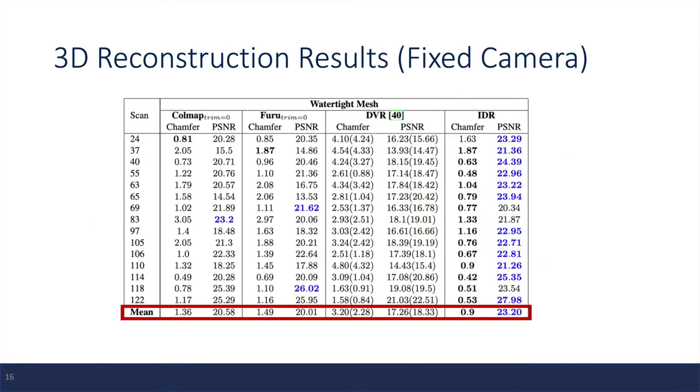So next, I am going to talk about some of the experiments performed by the authors. The first experiment is 3D reconstruction based on fixed cameras. In this case, the authors just took the ground-truth camera parameters. In this experiment, the authors compared the proposed method with three other baseline methods on 15 different objects.